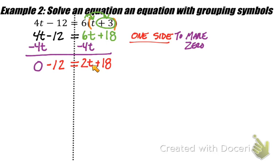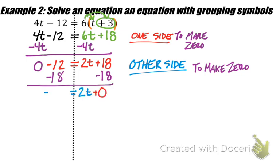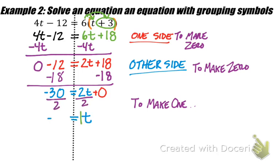Now that the variable terms are on one side, everything else on the right side has to go on the opposite side. We're adding 18 to the 2t, so we subtract 18 from both sides — the inverse operation of adding 18. Negative 12 minus 18 gives us negative 30 equals 2t. Finally, to make the coefficient 1, we divide both sides by 2, giving us t equals negative 15.